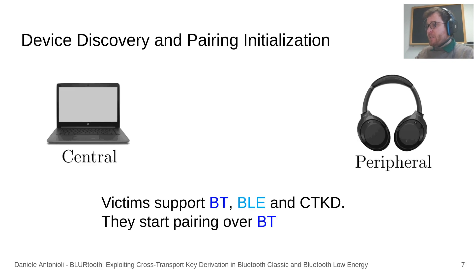Before describing the attacks in detail, we present our threat model. We consider two victim devices supporting BT, BLE, and CTKD. The victims want to secure their communication and start pairing over BT. Pairing is a protocol specified in the Bluetooth standard to establish long-term keys acting as the root of trust between devices. The pairing initiator is called the central — we name it Alice — while the responder is the peripheral — we name it Bob.